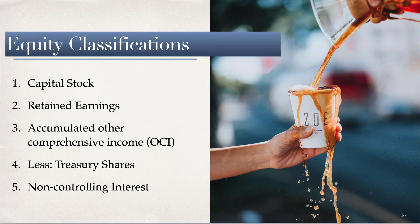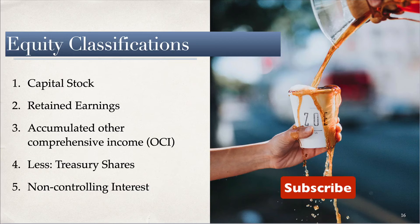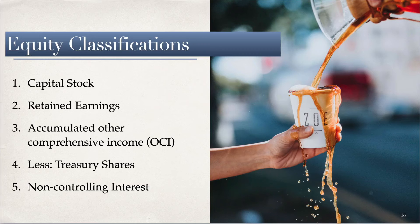Let's look at equity. You will almost always see the first two items: capital stock — which includes common stock, preferred stock, and additional paid-in capital (APIC) — and retained earnings. You may also see accumulated other comprehensive income, treasury stock (shares the company has repurchased, shown as a reduction), and non-controlling interest if you own a subsidiary where someone else owns a portion, say 10 percent.